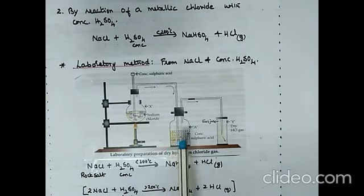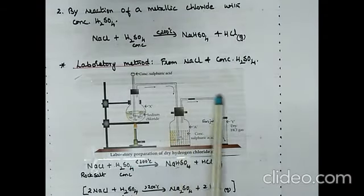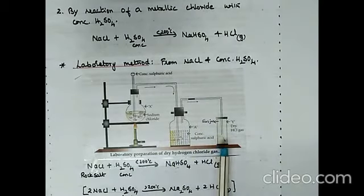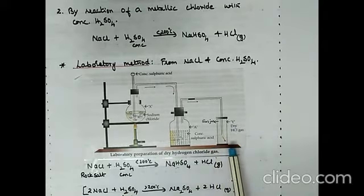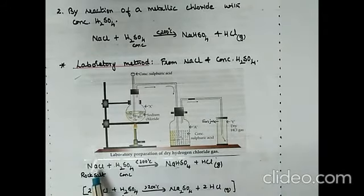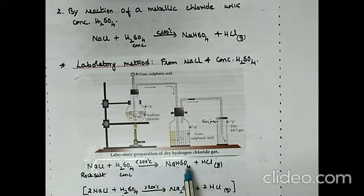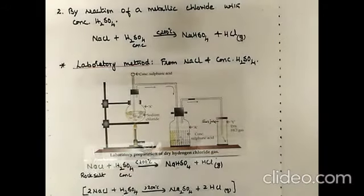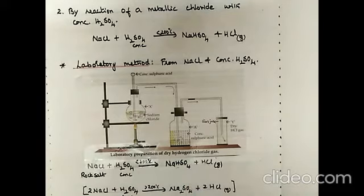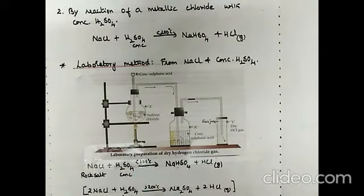The gas is dried by passing through concentrated sulfuric acid in washer bottle A, then collected in an upright gas jar by upward displacement of air. The reaction: sodium chloride reacts with concentrated sulfuric acid when heated below 200°C to give sodium bisulfate and hydrogen chloride gas. If heated above 200°C, sodium sulfate is formed instead — sodium bisulfate is an acid salt, sodium sulfate is a normal salt — so temperature must be kept below 200°C.